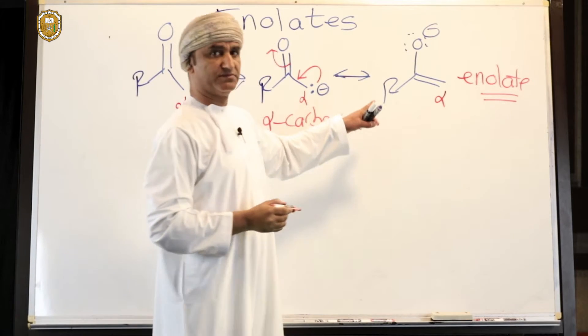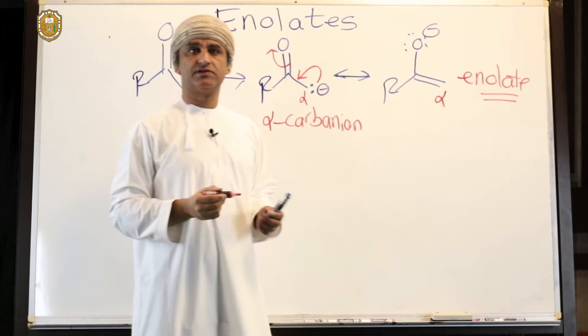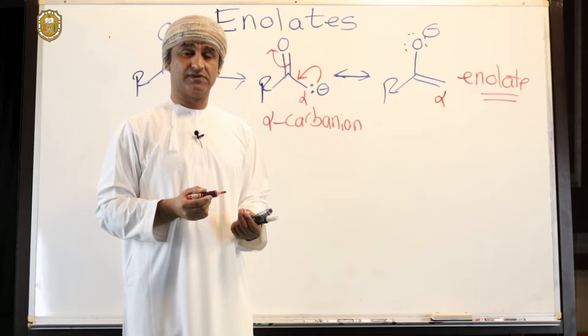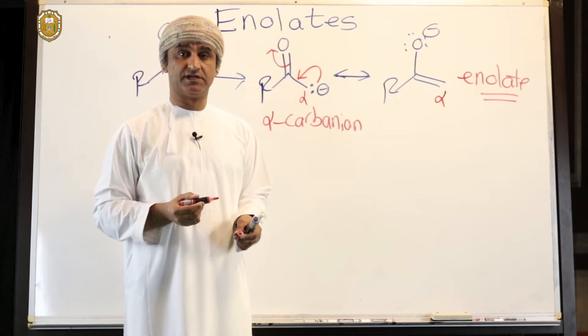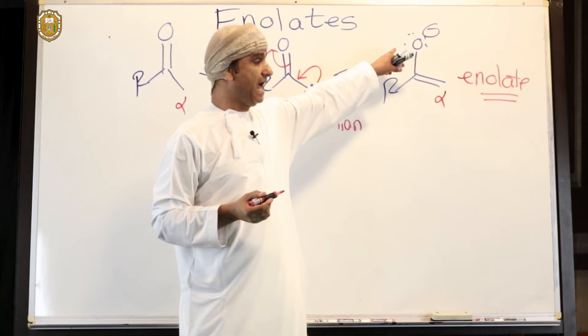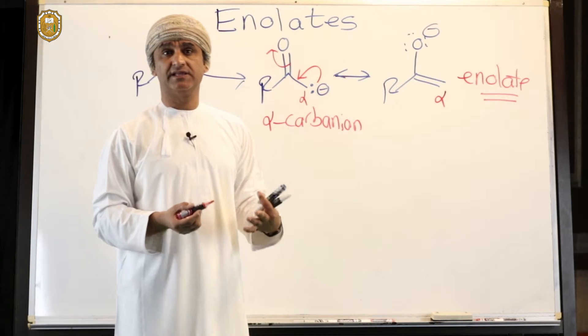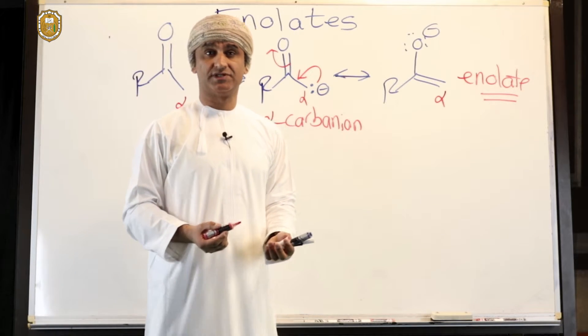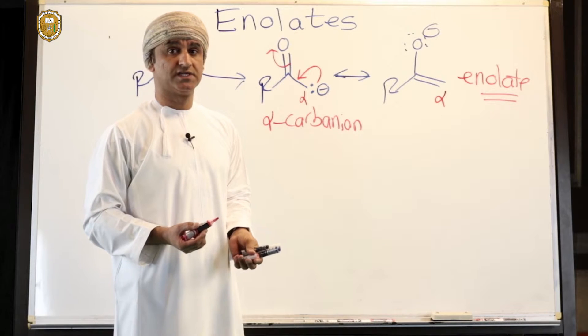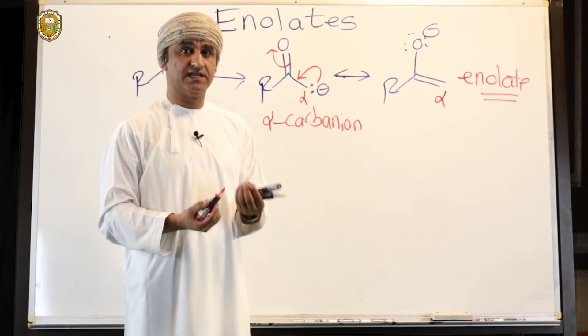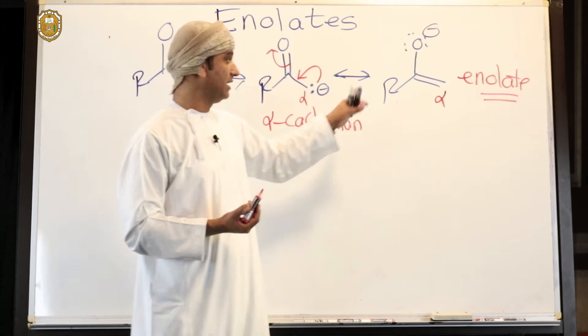The enolate is actually structurally related to the enol that we have experienced before where there is OH. The enolate can be viewed as a conjugate base of enols, and thus 'ate'. With 'ate' being negatively charged, of course it's enolate.